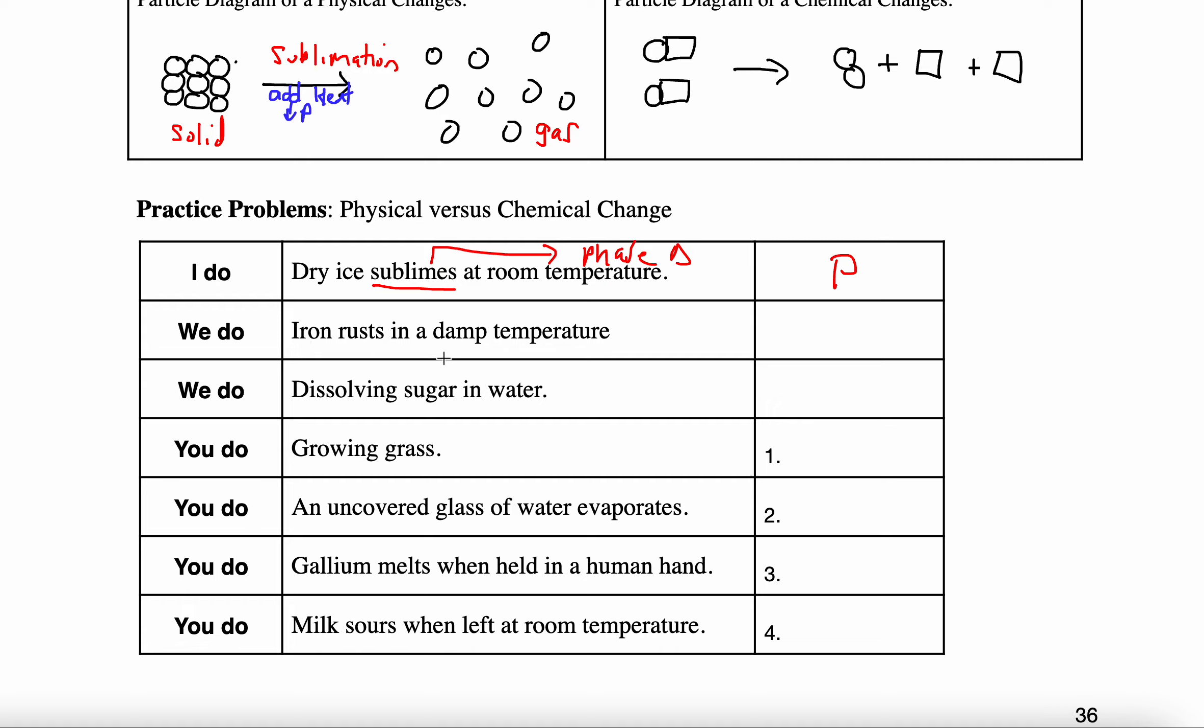The 'we do': iron rusts in damp temperature. I noticed this word rust, and it's one of the specific ones listed under the chemical change, so this is chemical. My last 'we do': dissolving sugar in water. I noticed this word dissolving, and if I've been paying attention, I noticed that I wrote dissolving as an example of a phase change. If it's a phase change, that means it is physical.